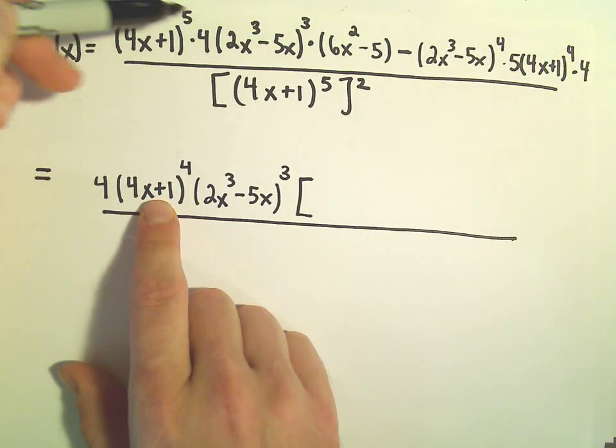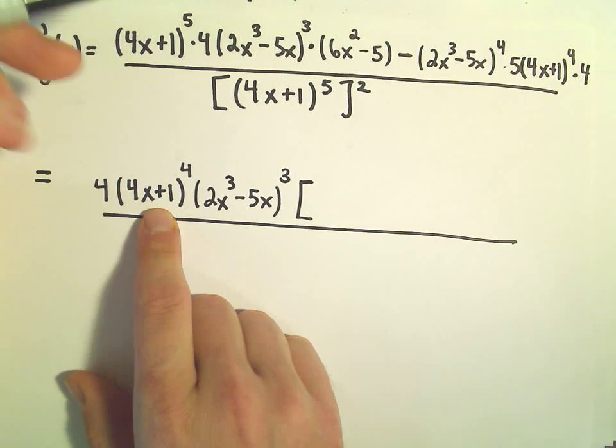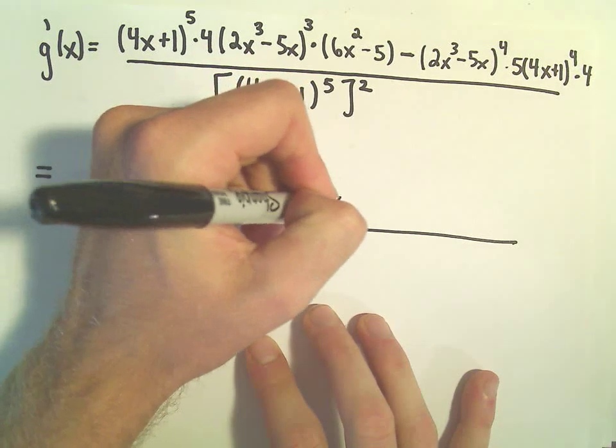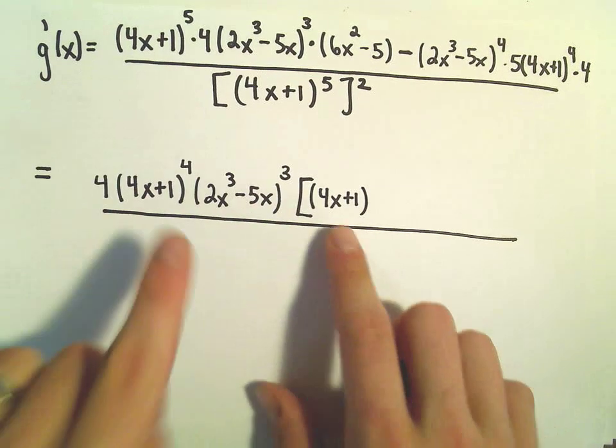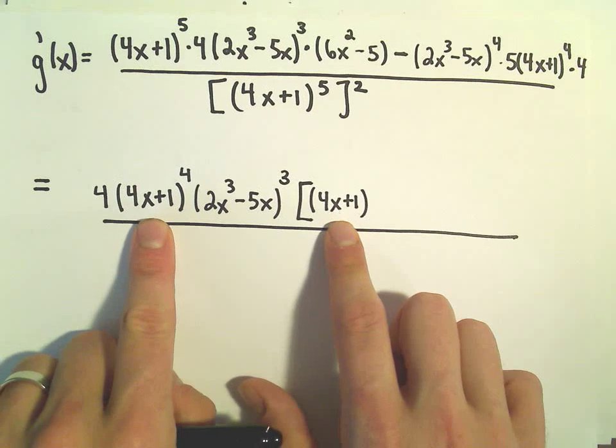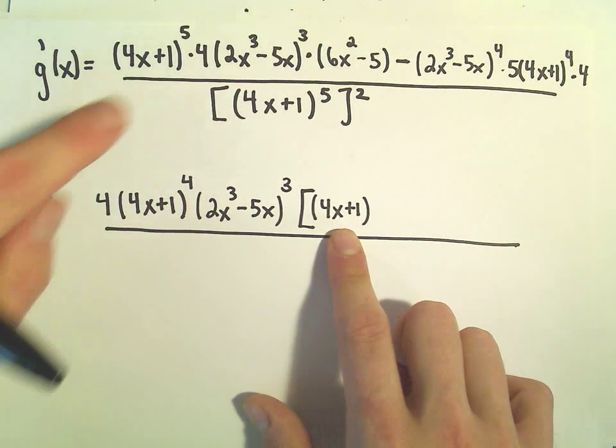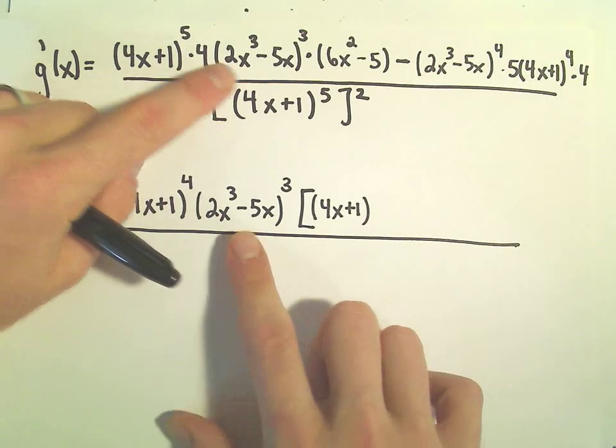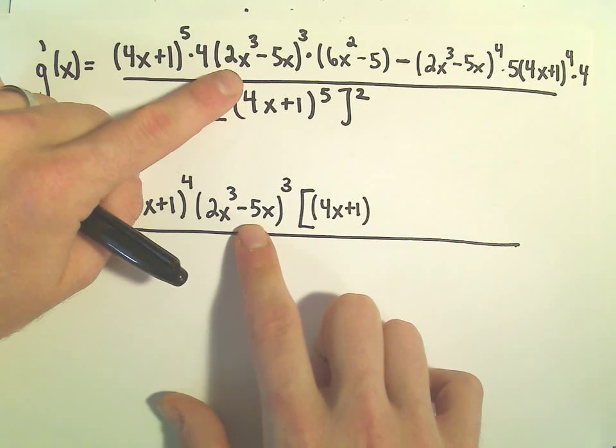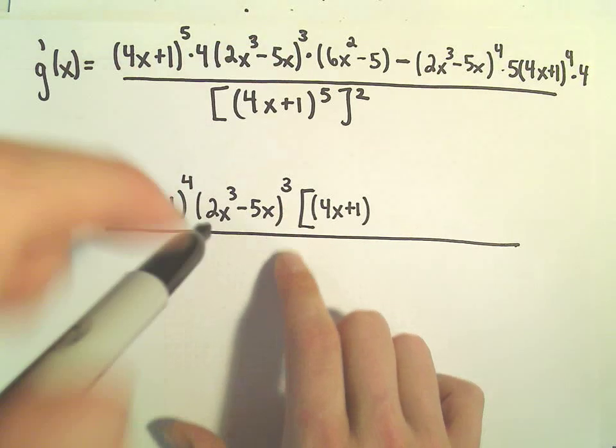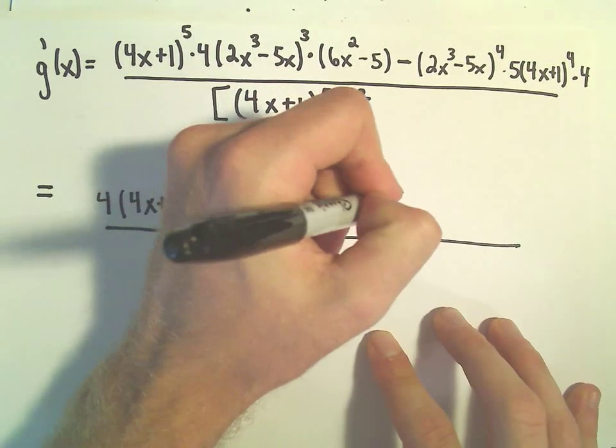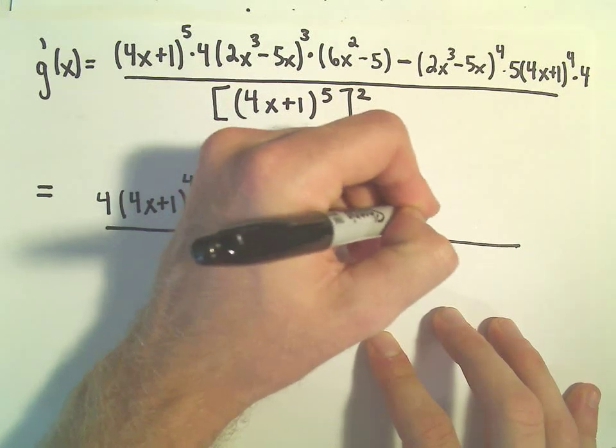So we pulled the 4 out. If we multiply by a 4x plus 1 to the 1st power, when we distribute and add the exponents, that will give us our 4x plus 1 to the 5th. We pulled out the correct 2x cubed minus 5x to the 3rd. So I think all we would need now would be the 6x squared minus 5.